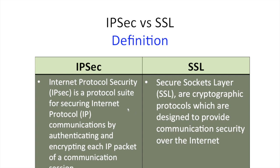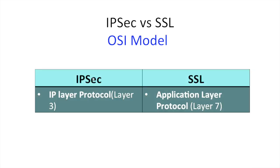Now let's see which OSI model layer each refers to. IPSec operates on Layer 3, that is the IP layer protocol, and SSL operates on Layer 7, that is the application layer protocol.